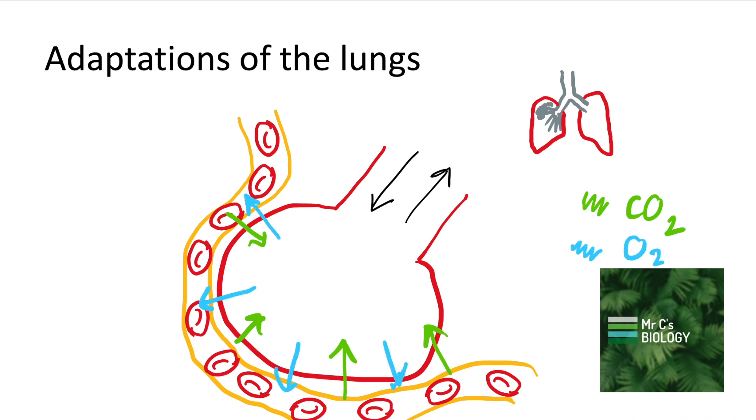Oxygen, on the other hand, is in a higher concentration in the air, in the lungs, than it is in the blood. And so it moves from a high concentration to a low concentration by diffusion into the blood. So that by the time the blood's leaving, the red blood cells are full of oxygen, carrying oxygen molecules.